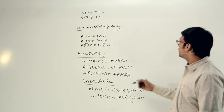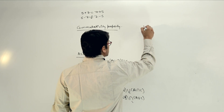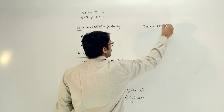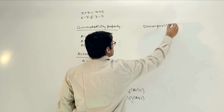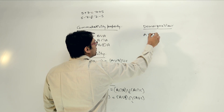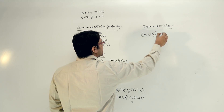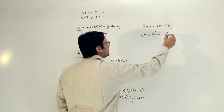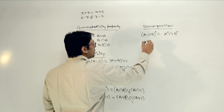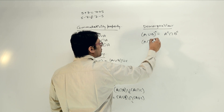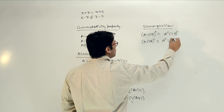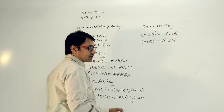The next property is called De Morgan's law. If we do (A union B) complement, it can be written as A complement intersection B complement. If we have (A intersection B) complement, it can be written as A complement union B complement. That is De Morgan's law.